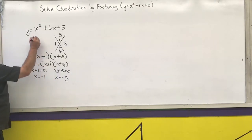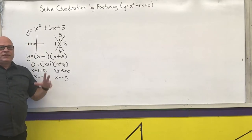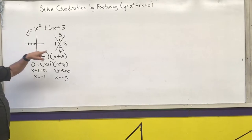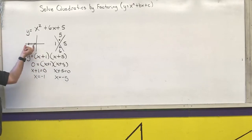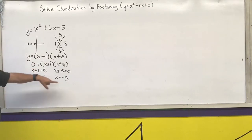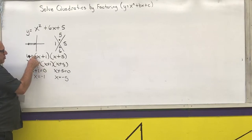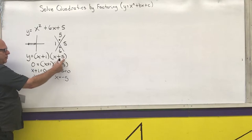Those solutions are the x-intercepts of the graph — so there's an x-intercept at negative 1 and at negative 5. A quick shortcut: if there is no coefficient in front of the x in a factor, the zeros are simply the opposite of whatever number is inside the parentheses. So the opposite of positive 1 is negative 1, and the opposite of positive 5 is negative 5.